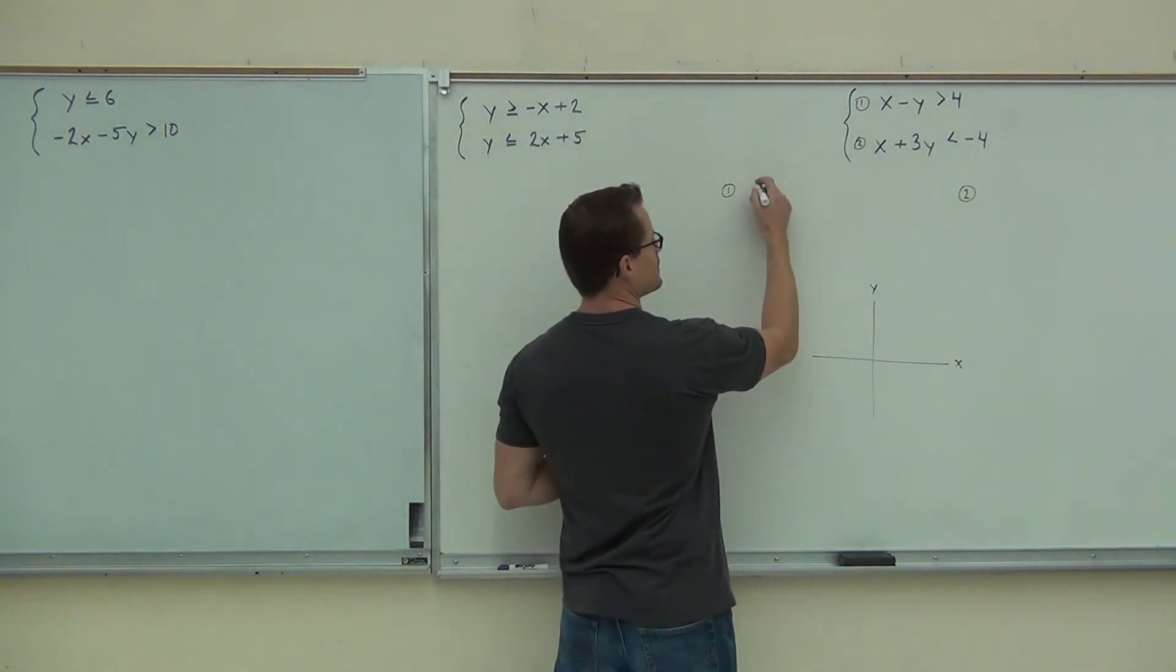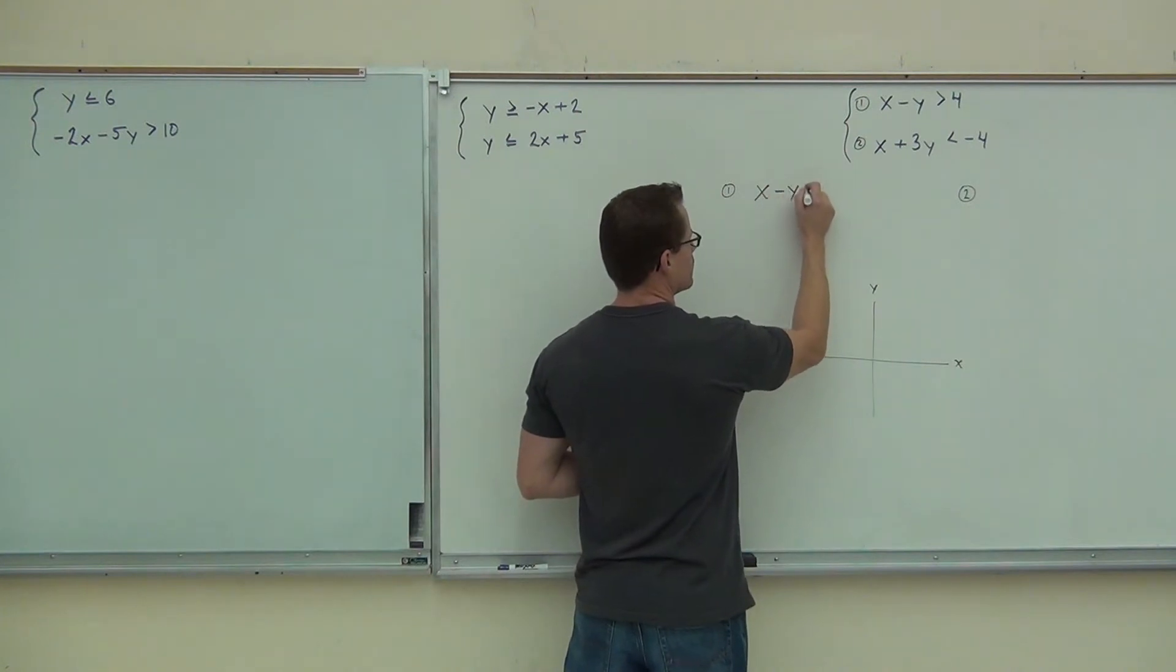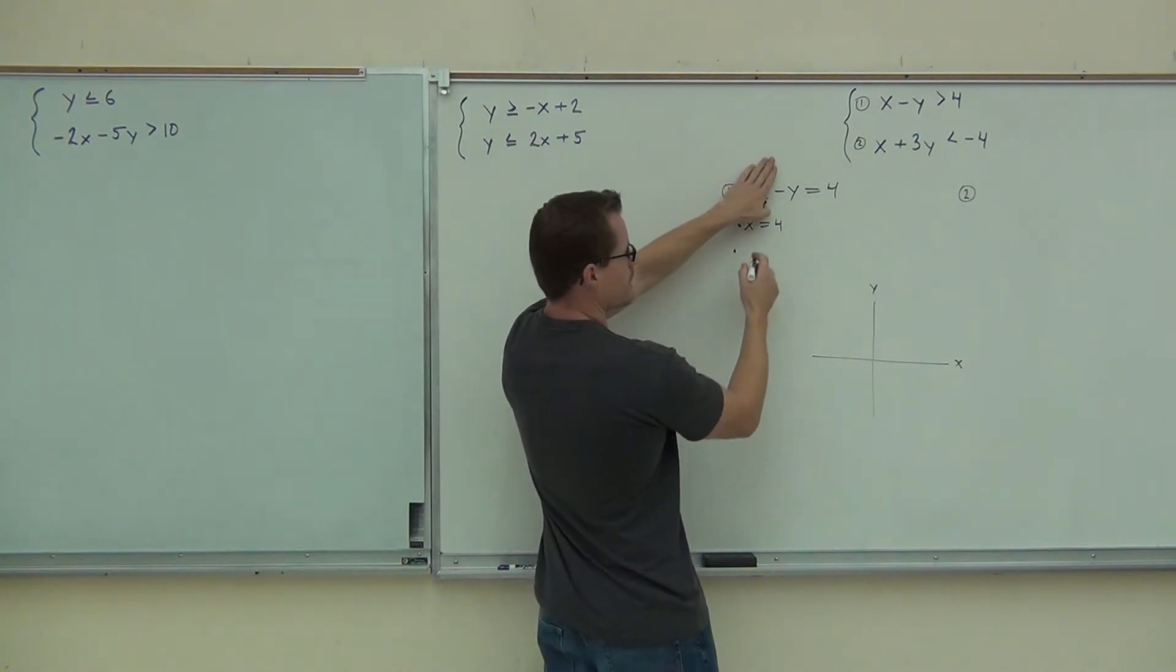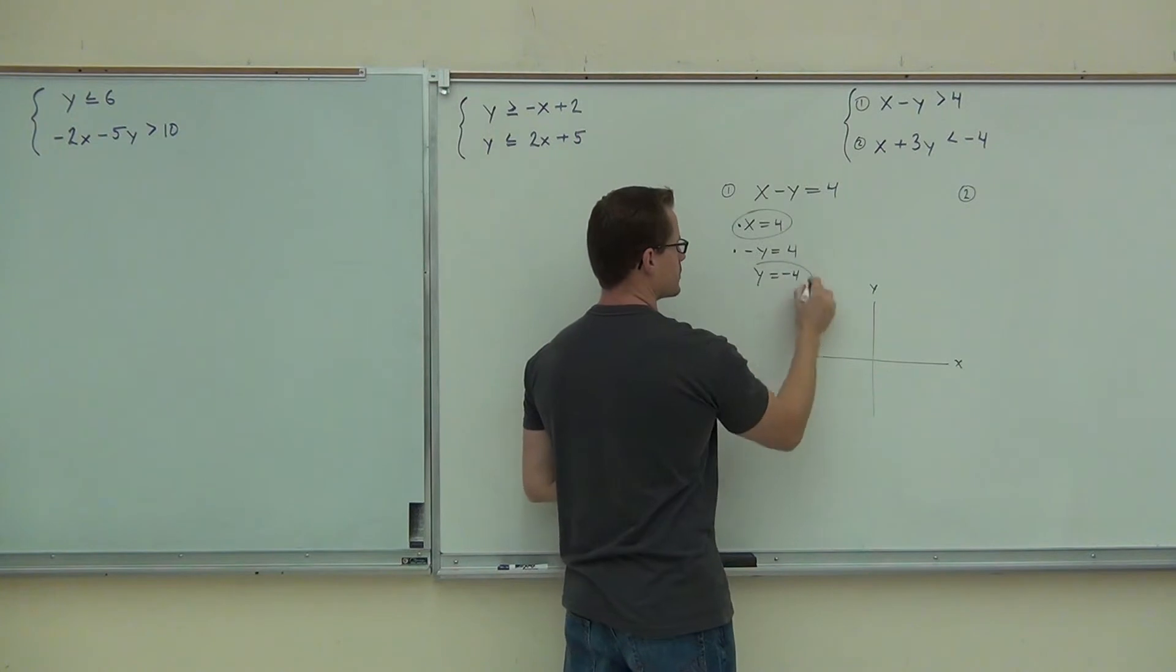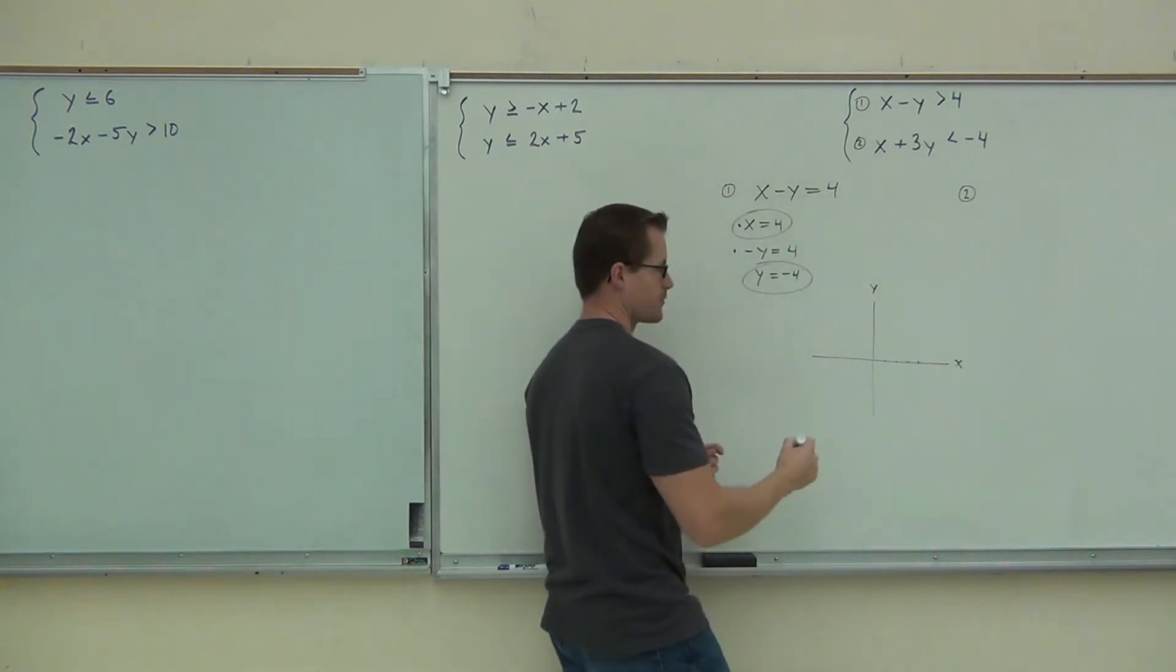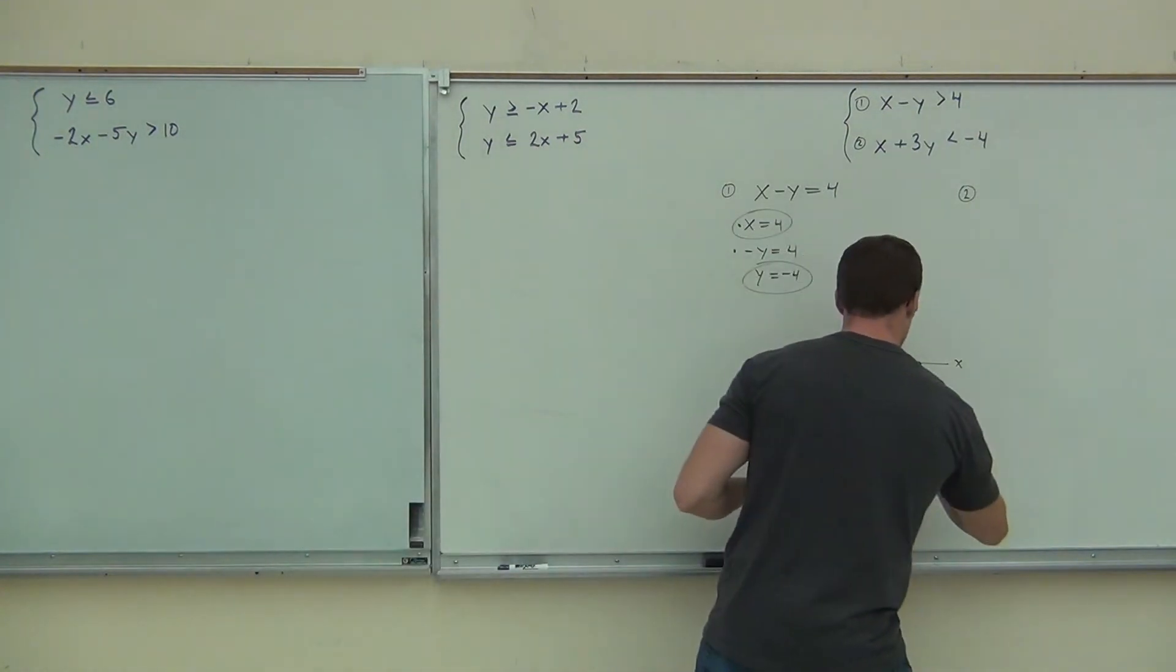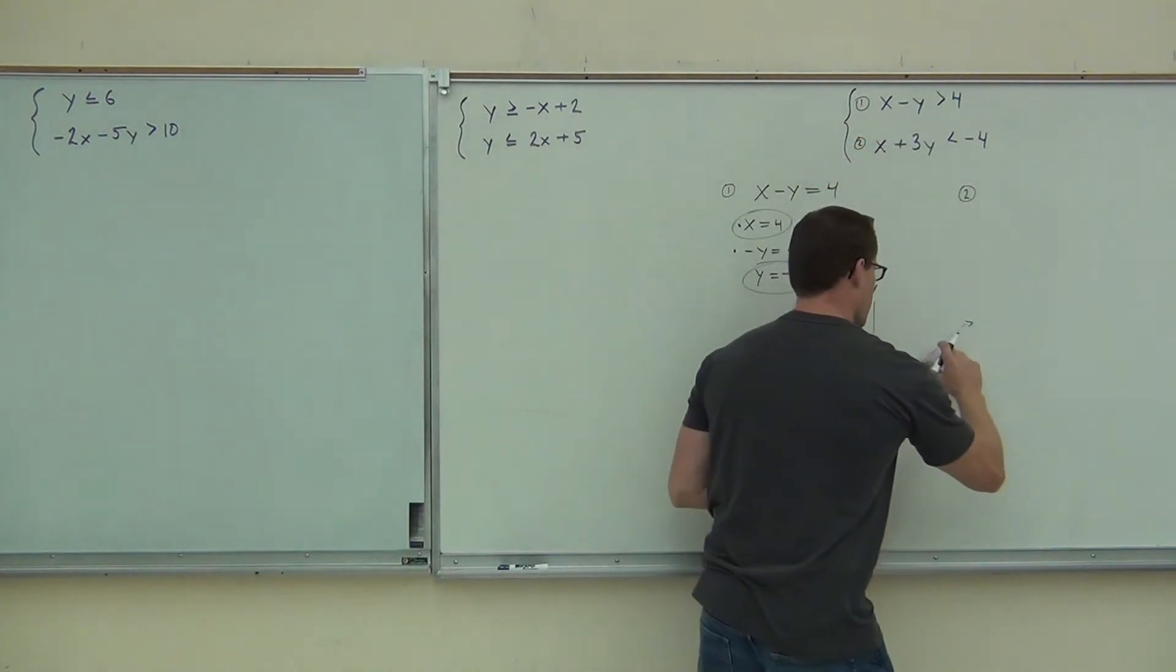So first inequality says we're going to temporarily set that thing equal instead of the inequality that we have. So we'll have x minus y equals four, just for a moment, just so we can find our graph. We cover up everything but the x to find the x-intercept. In this case, we're done. That's great. Cover up everything but the y, including the sign, to find the y-intercept. So if negative y equals four, we know that y equals negative four. Now we've got our x and our y-intercepts. X-intercept says we're going over to positive x and four. Y equals negative four says we're going down on the y-axis to negative four. Put a point there. We'll grab our line.